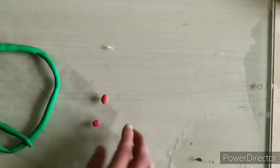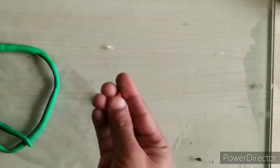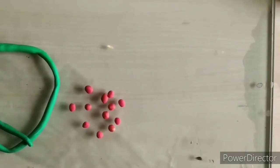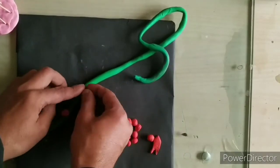Step 2: Roll the red clay into tiny balls and carefully press them into the body of the snake as shown.